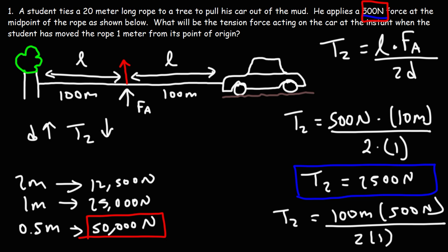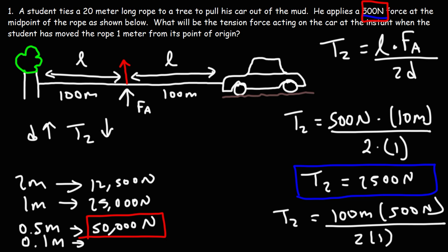The tension force is very high at the start but gets weaker as he pulls the car out of the mud, so once he gets the car moving he doesn't want to stop. It's very difficult to overcome static friction, but easier to overcome kinetic friction since kinetic friction is usually less than static friction. Initially it's hard to get the car moving, but fortunately at very low distances the tension force is very high — at just 0.1 meters (10 centimeters), the force would be 250,000 Newtons.